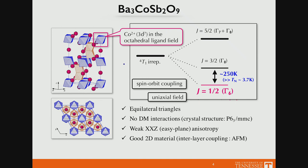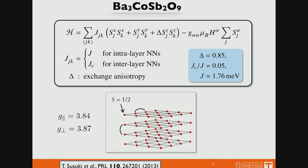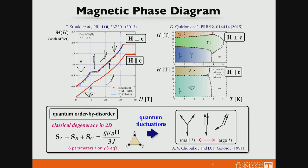Because the octahedra surrounding each cobalt have octahedral symmetry to a very good approximation, you end up with an isotropic Heisenberg interaction. DM interactions are not allowed by symmetry in this material. There is a weak easy-plane anisotropy simply because there is still some distortion. This is indeed a good realization of a quasi-two-dimensional Heisenberg model.